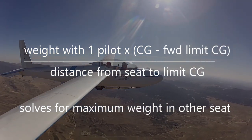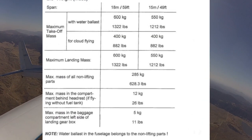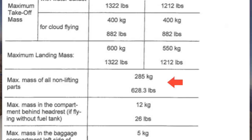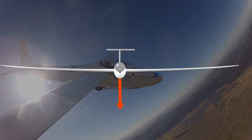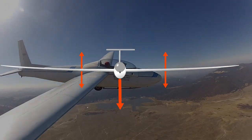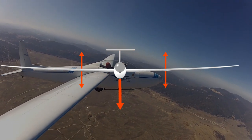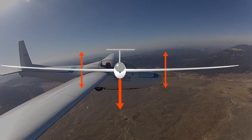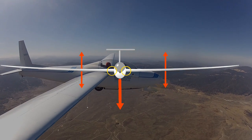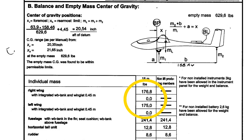In addition to the total weight limit, many gliders that can hold water ballast in the wings will have an additional weight limit for the non-lifting parts. The non-lifting parts are loads that are hung from the wings and add to their bending moment. This includes everything except the wings and the ballast contained within them. The wings themselves and the water ballast within them are supported span-wise by the wings, so while the weight affects performance, it doesn't significantly stress the wing structure or the wing-fuselage attachments. A glider that has this limitation will have the weight of the lifting and non-lifting parts noted in the logbook weight and balance entry.